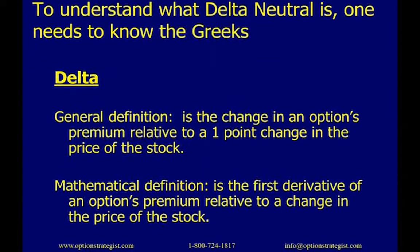To understand what delta neutral is, one needs to know the Greeks. The general definition of delta is this: delta is the change in an option's premium relative to a one-point change in the price of the stock — either up or down. A more mathematical definition is that delta is the first derivative of an option's premium relative to a change in the price of the stock.